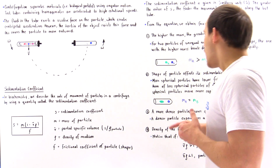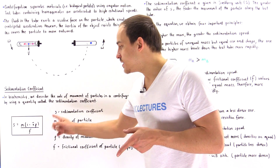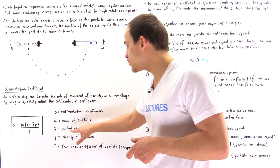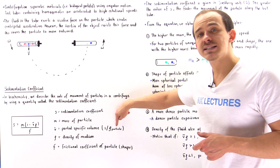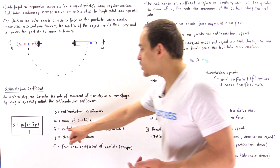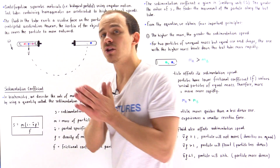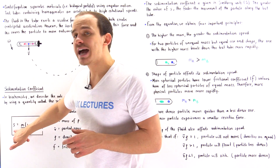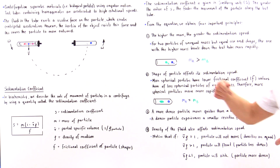Principle three: a more dense particle moves quicker than a less dense particle. The density of our particle in this equation is given by v-bar, the partial specific volume, which equals 1 divided by the density of that particle. If the density of that particle increases, this fraction decreases, so v-bar decreases. If v-bar decreases, this quantity in the numerator gets larger, meaning S increases, and that means the particle will move faster. So a denser particle moves faster than a less dense particle because it experiences a smaller resistive force.